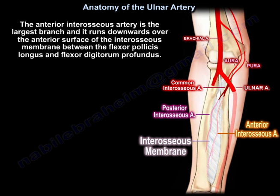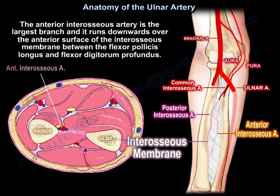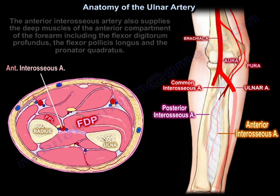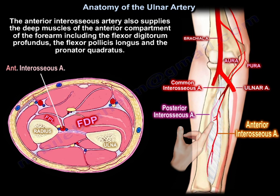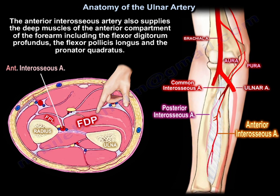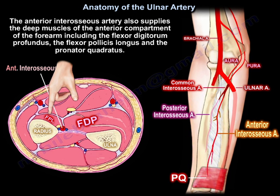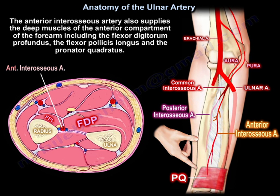The anterior interosseous artery is the largest branch and runs downwards over the anterior surface of the interosseous membrane between the flexor pollicis longus and the flexor digitorum profundus. It also supplies the deep muscles of the anterior compartment of the forearm, including the flexor digitorum profundus, the flexor pollicis longus, and the pronator quadratus.